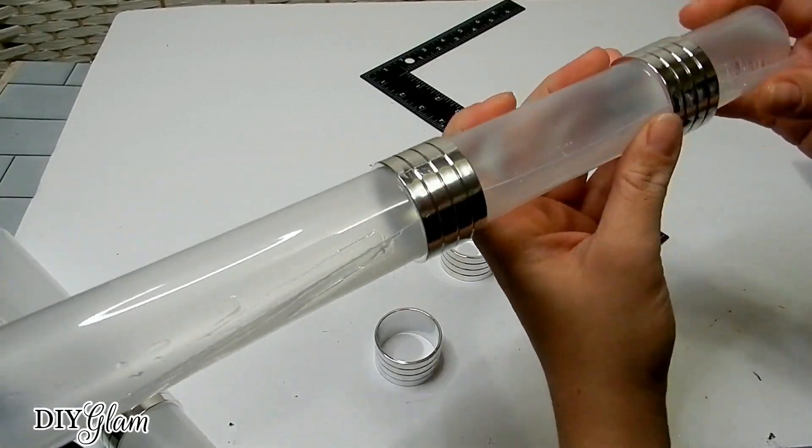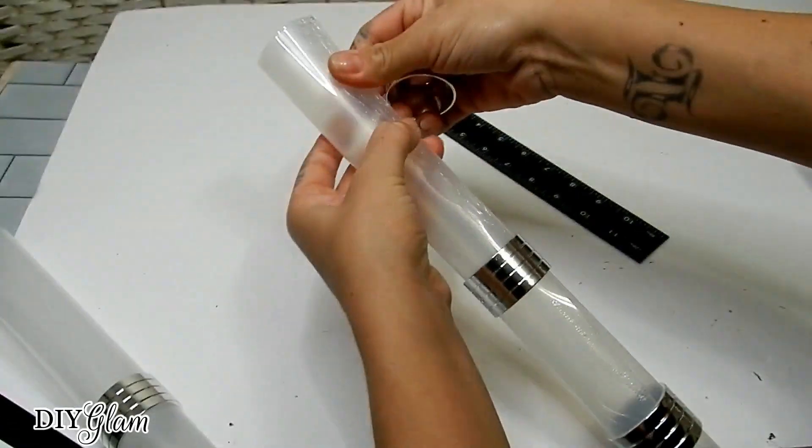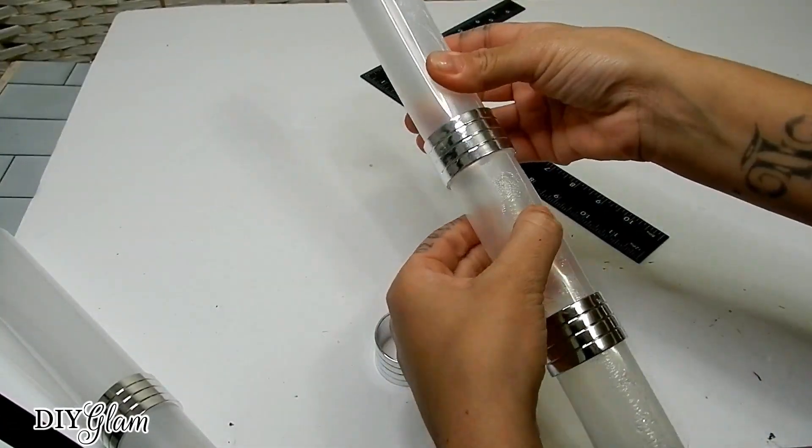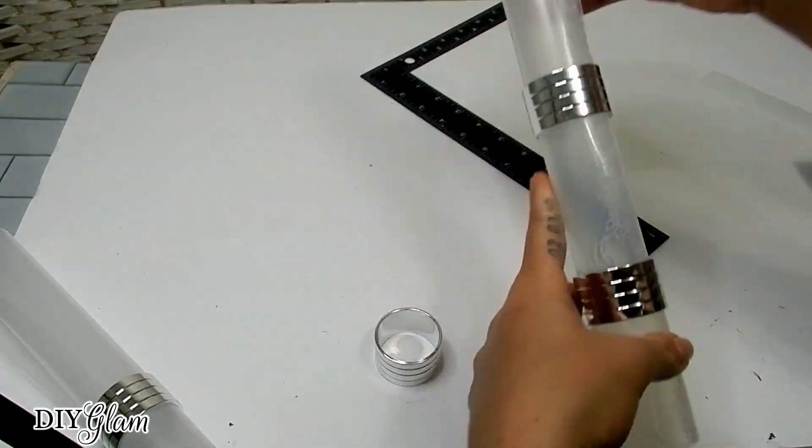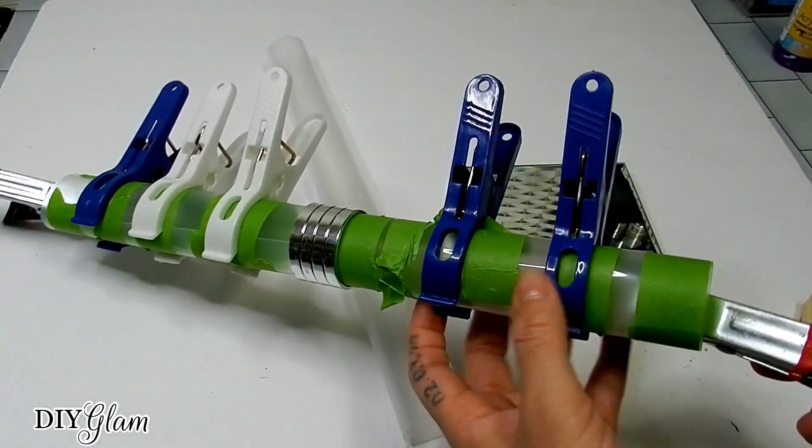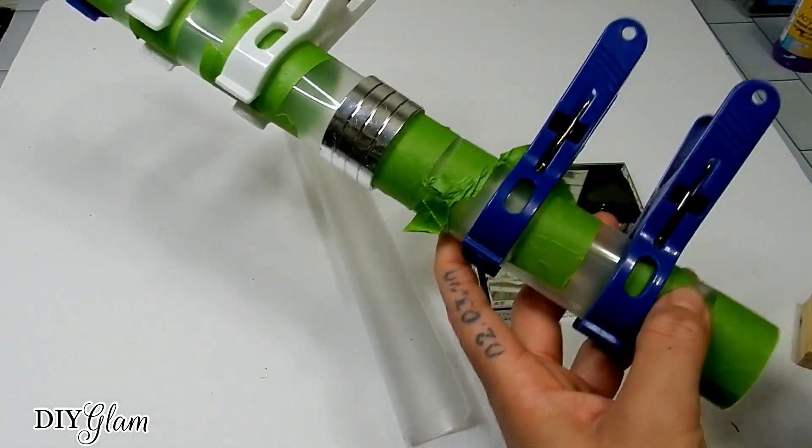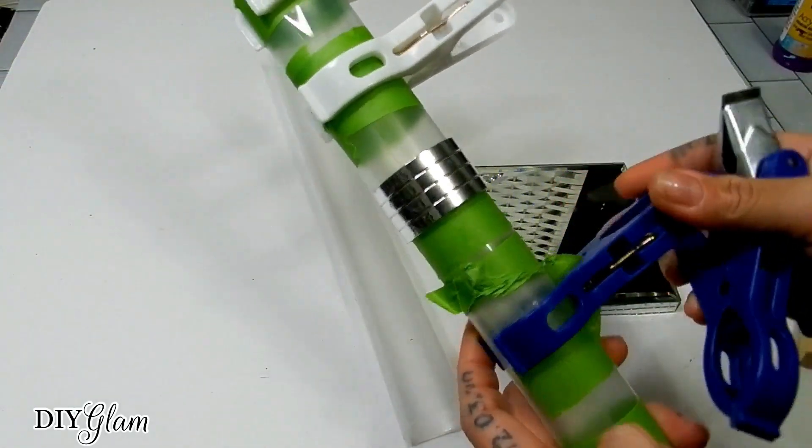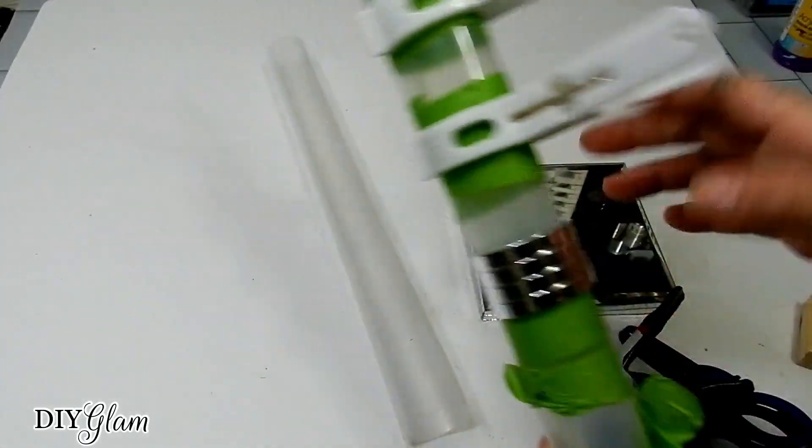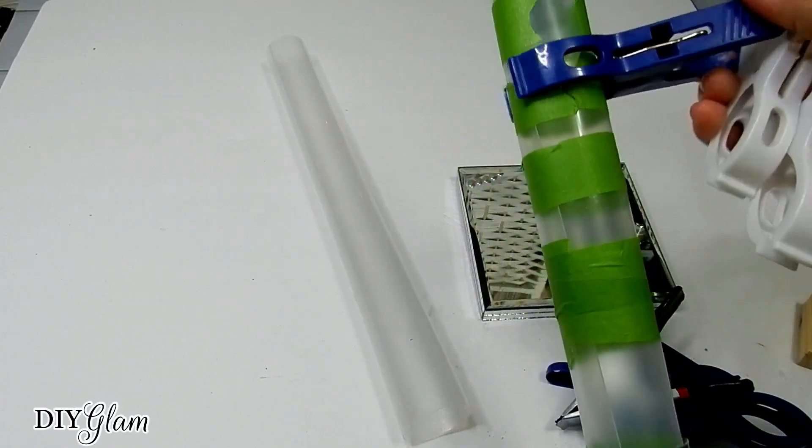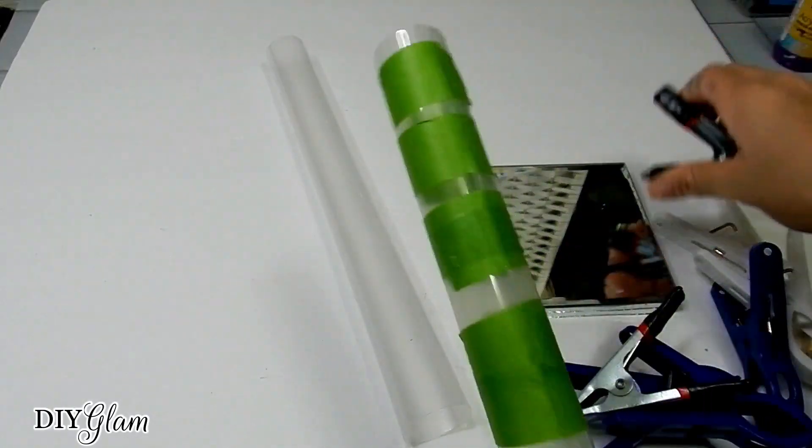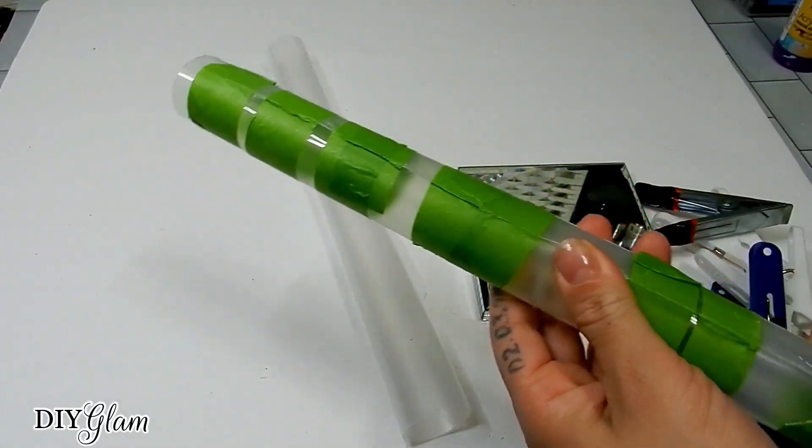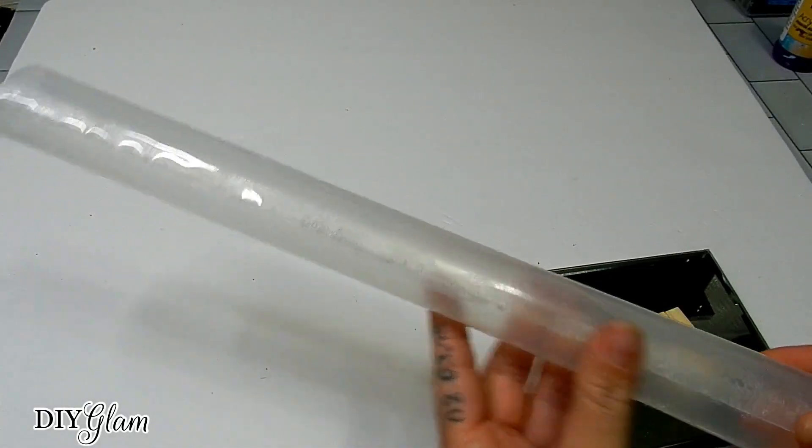Now here I have some more napkin rings and I'm just going to add these to either side just to ensure that my shape is intact. And then using some tape and some clips, I use that to hold all this together overnight and let that E6000 completely dry. Once my light fixture is dry, I'm going to go ahead and remove everything from this.